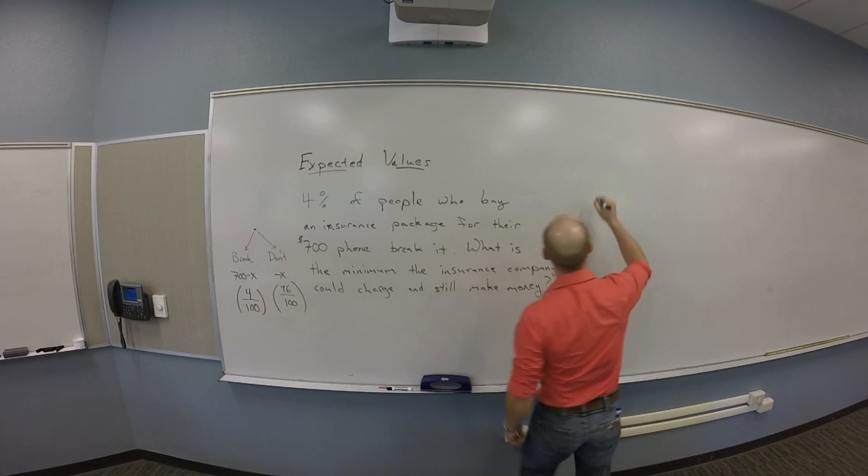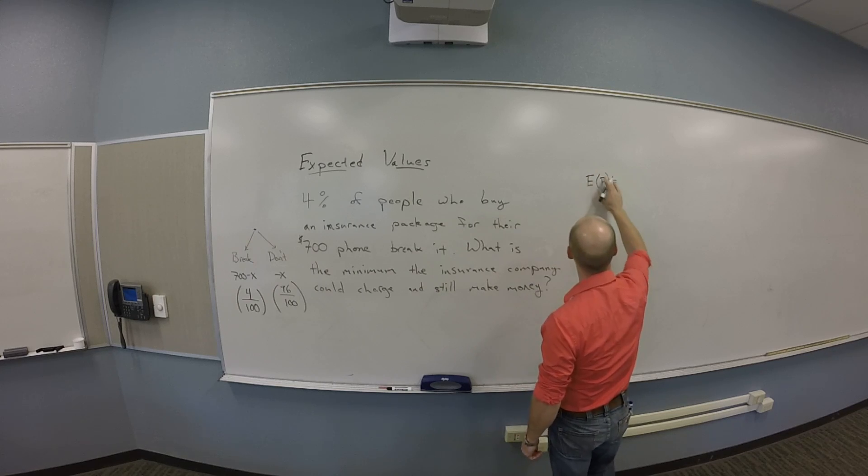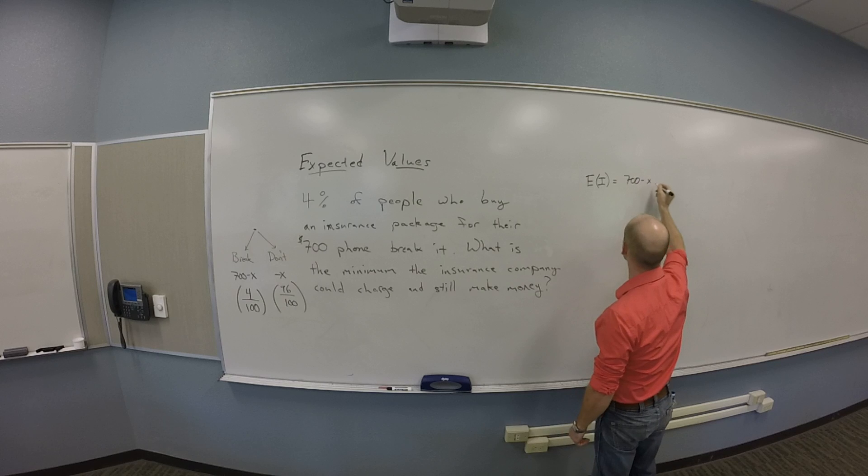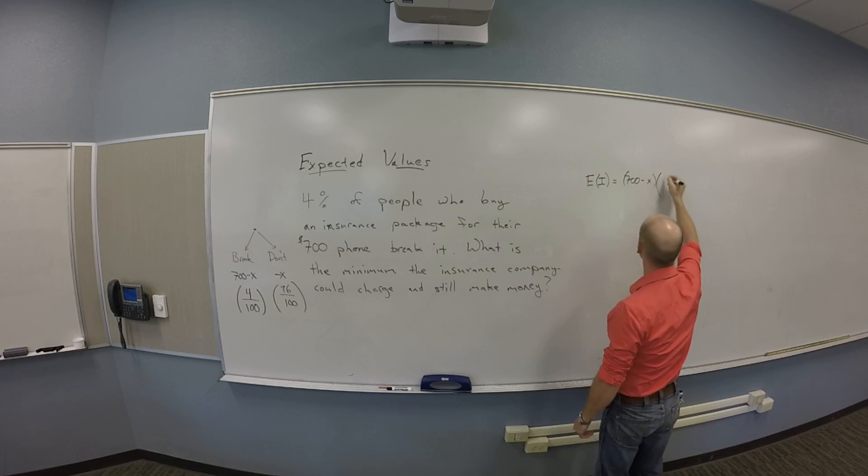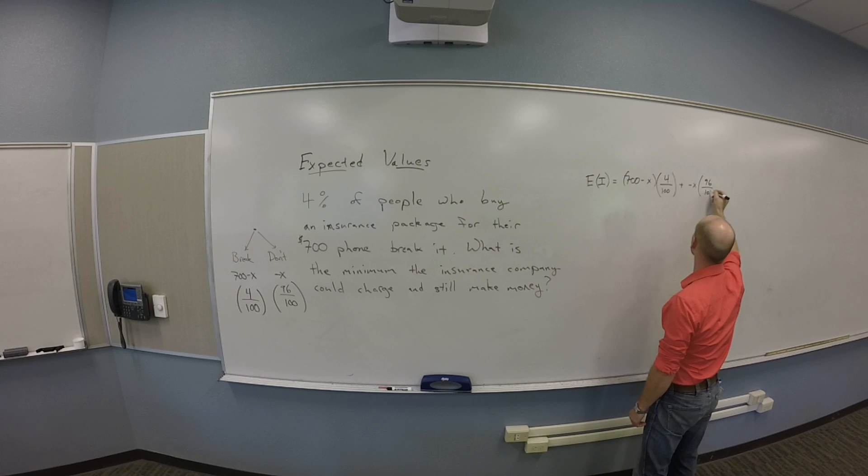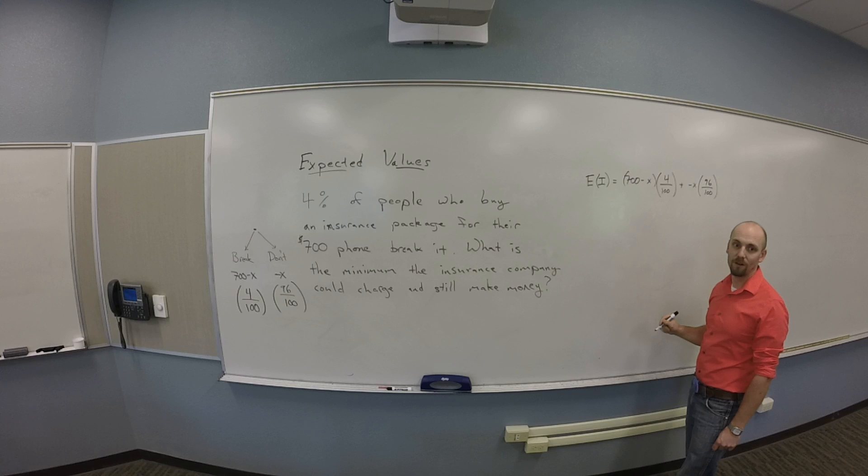And so I think my expected value from a customer standpoint, so expected value of insurance plan, is 700 minus X times 4 over 100 plus negative X times 96 over 100.